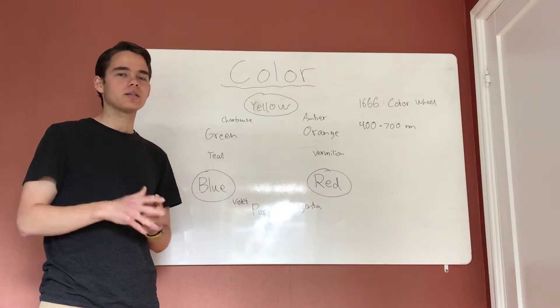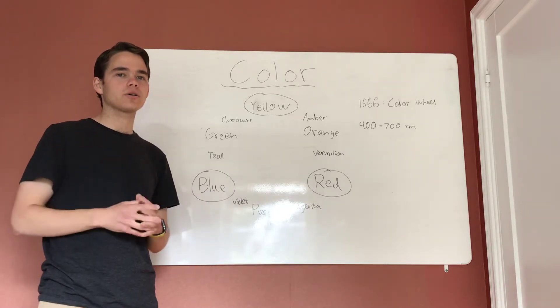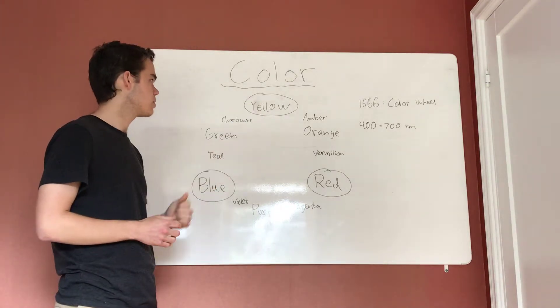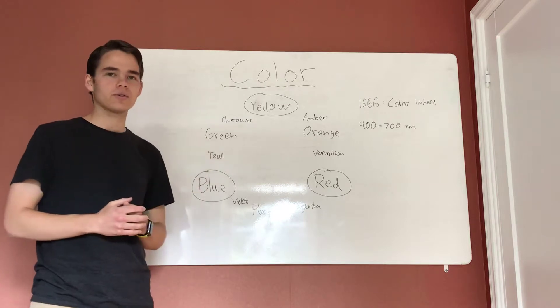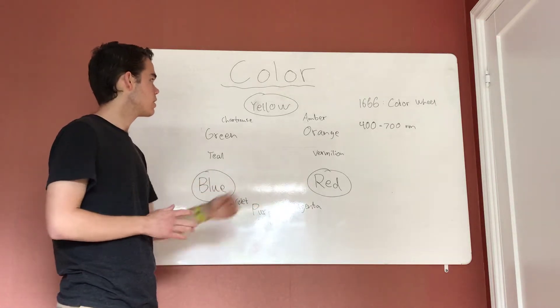Then the secondary colors are created from mixing two primary colors. So green is created by mixing blue and yellow, purple is created by mixing blue and red, and orange is created by mixing red and yellow. So orange, green, and purple are all secondary colors.